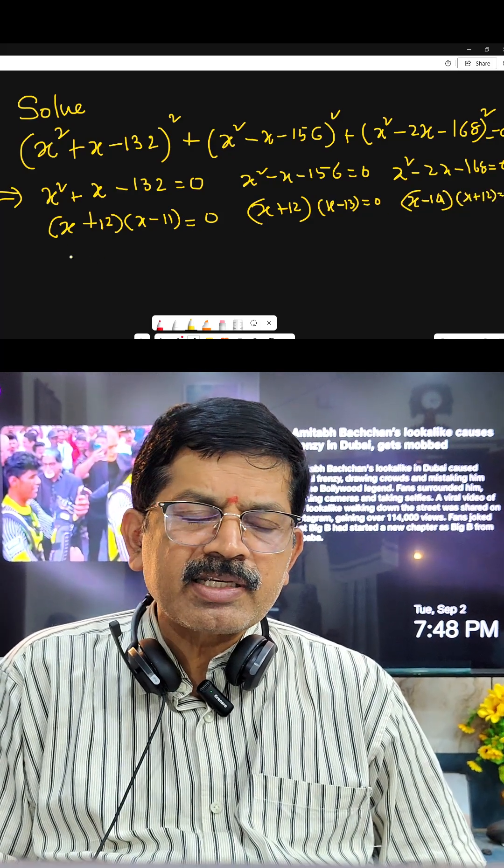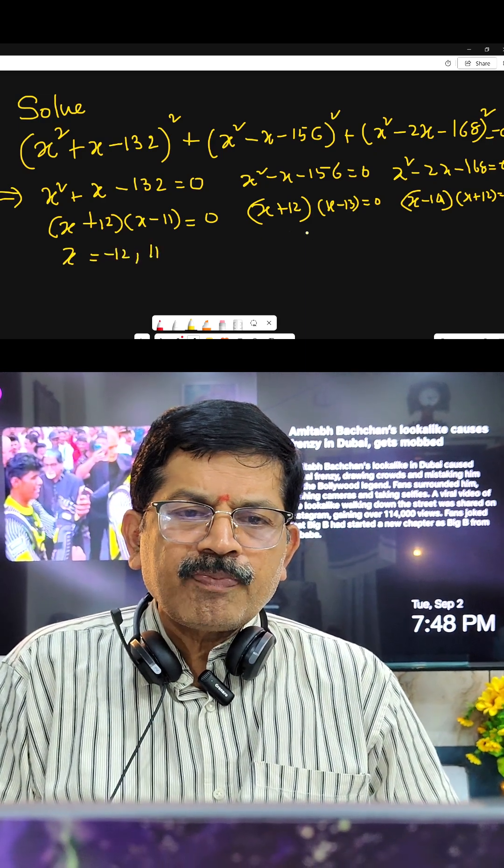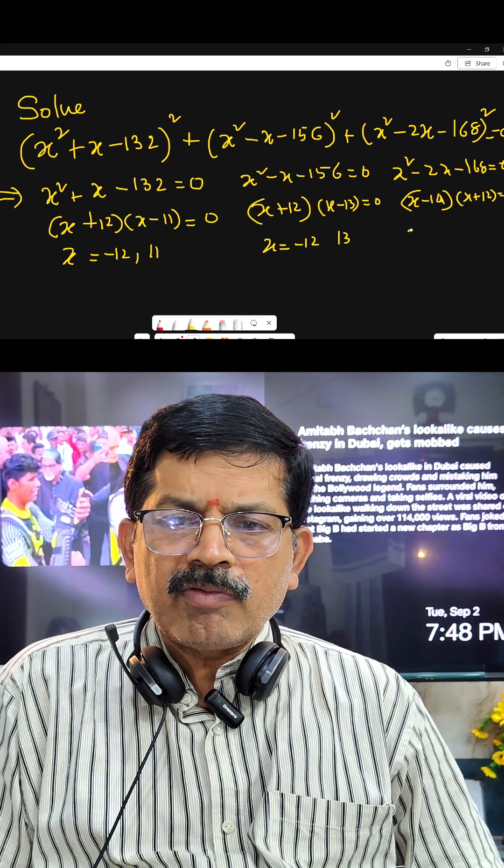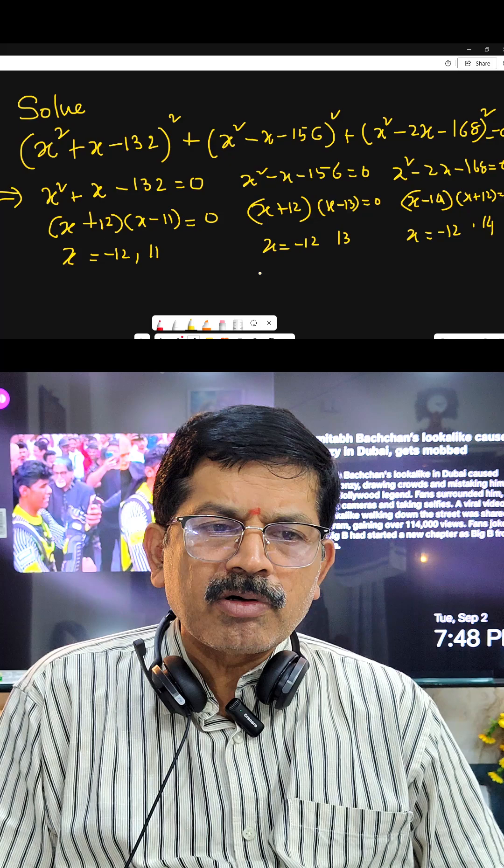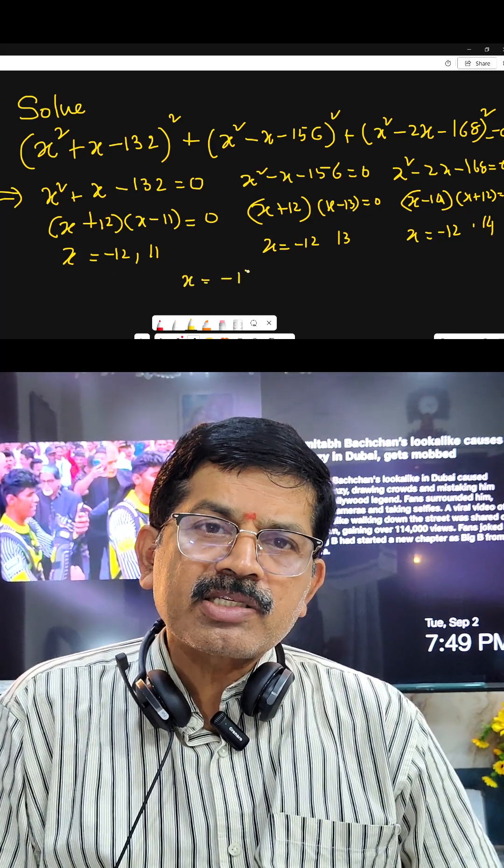If you solve these equations individually: x = -12, 11. Second one, x = -12, 13. Third one, x = -12, 14. But all should be 0. That's why your answer will be x = -12.